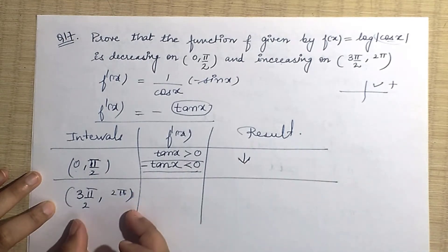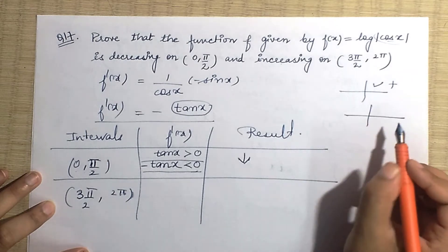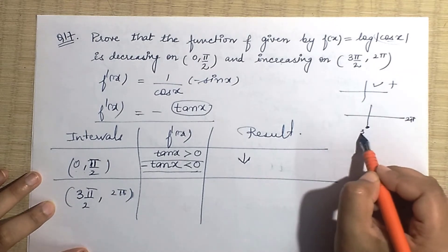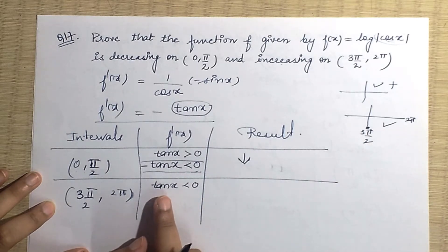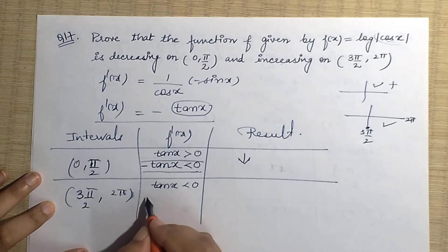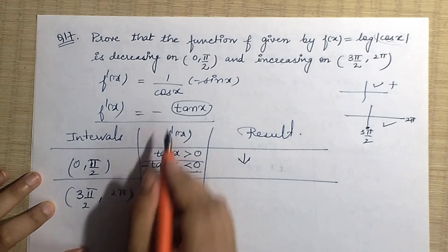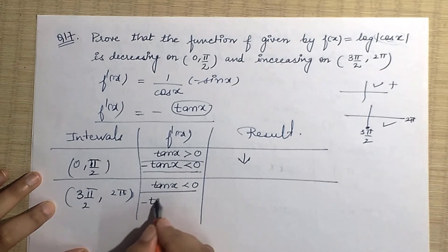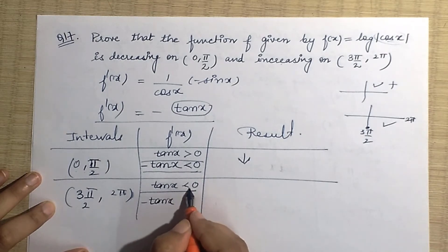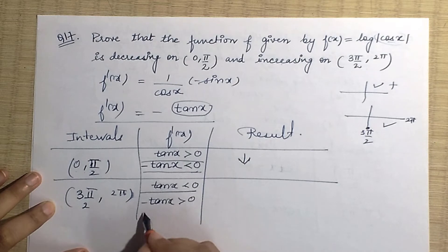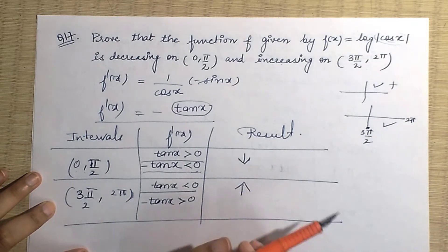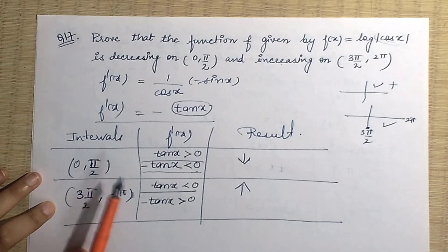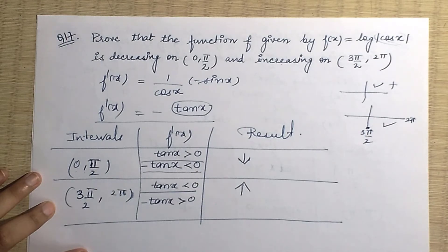Now for the interval (3π/2, 2π): this is the fourth quadrant, where tan x is already negative — less than zero. But f'(x) = -tan x, so multiplying by minus flips the inequality, making f'(x) > 0. So in this interval the function is increasing. We've shown decreasing on (0, π/2) and increasing on (3π/2, 2π). Very easy!